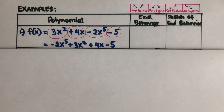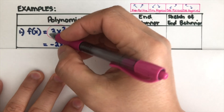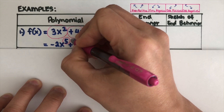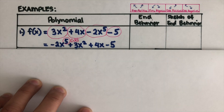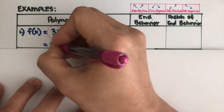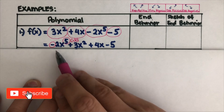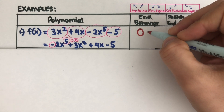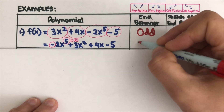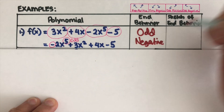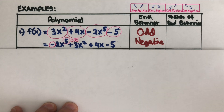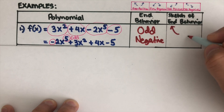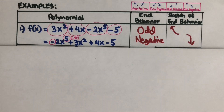Now, how do we describe if it's odd or even, or positive or negative? First, we look at the exponent. In this problem, the highest exponent is 5, which is odd. Then to determine if it's positive or negative, we look at the sign of the leading coefficient, which is negative. So this is an example of odd negative. Odd negative is going to look like this — it goes up on the left and down on the right.